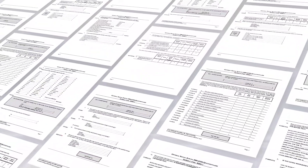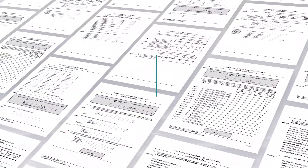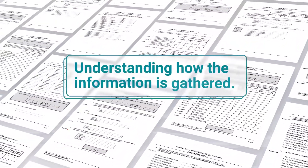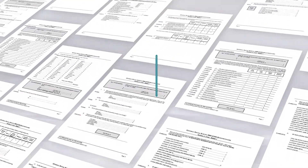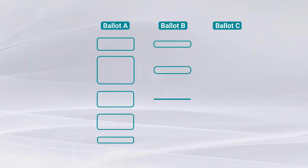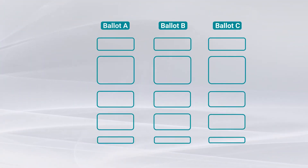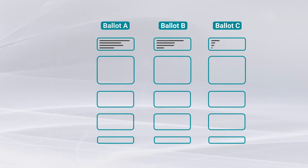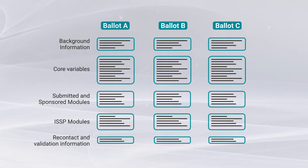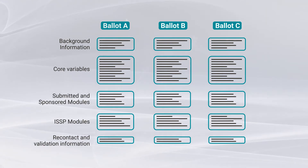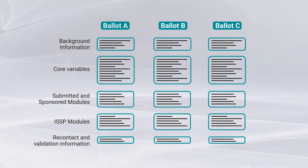Working with the GSS dataset requires understanding how the information is gathered. There are actually three versions of the questionnaire, which are known as ballots. Ballots contain both overlapping and different sets of questions. Using ballots shortens the length of the survey and eases the respondent's effort.